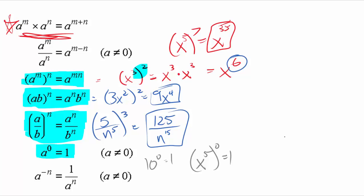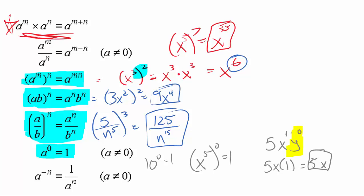Where it gets a little tricky is if I have something like 5xy to the zero power — then only the part attached to the zero exponent becomes 1. The x here is really x to the first, so this would be 5x times 1, which is just 5x. It doesn't make everything in there a 1; it only makes what's raised to the zero power equal to 1.